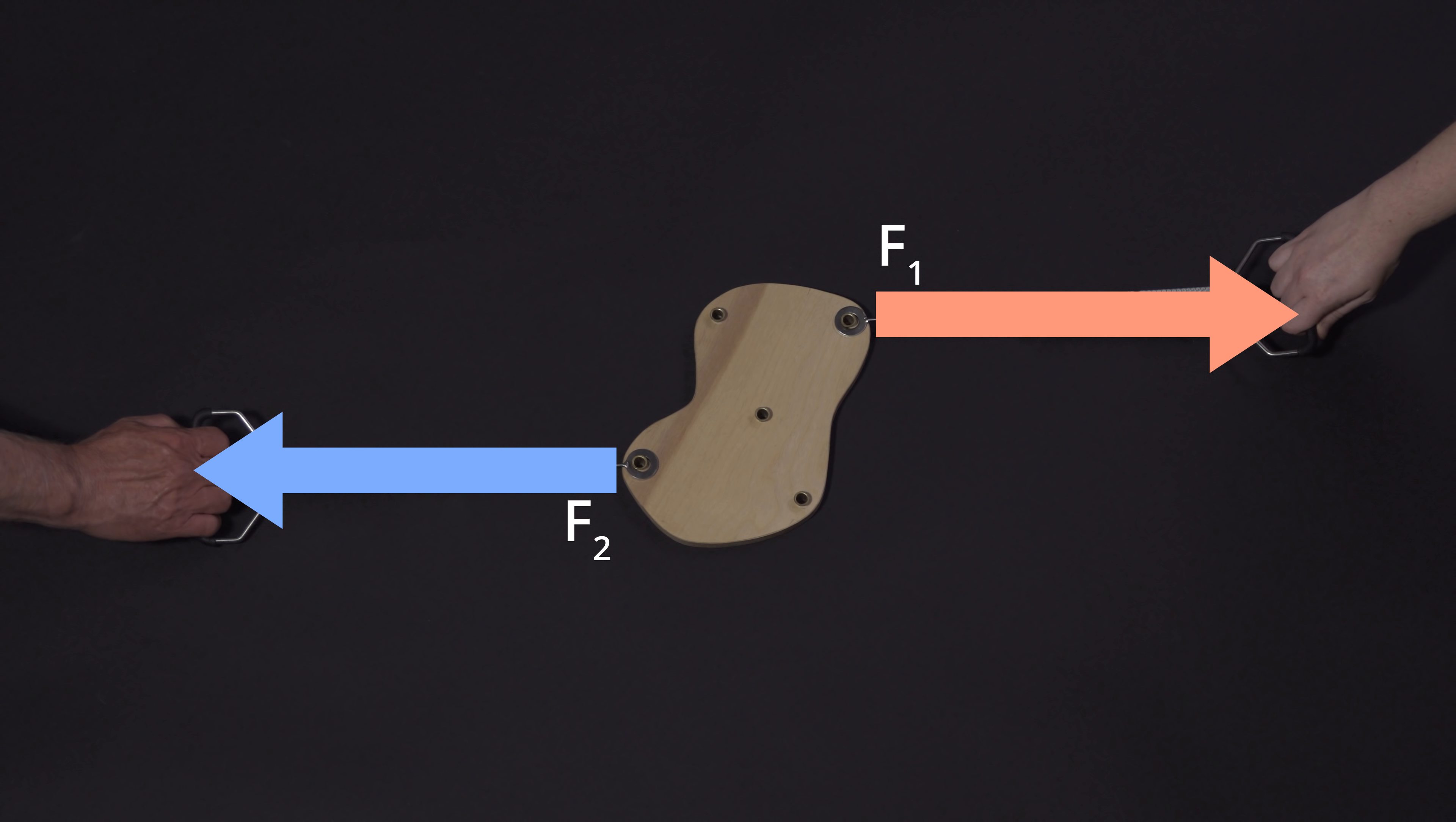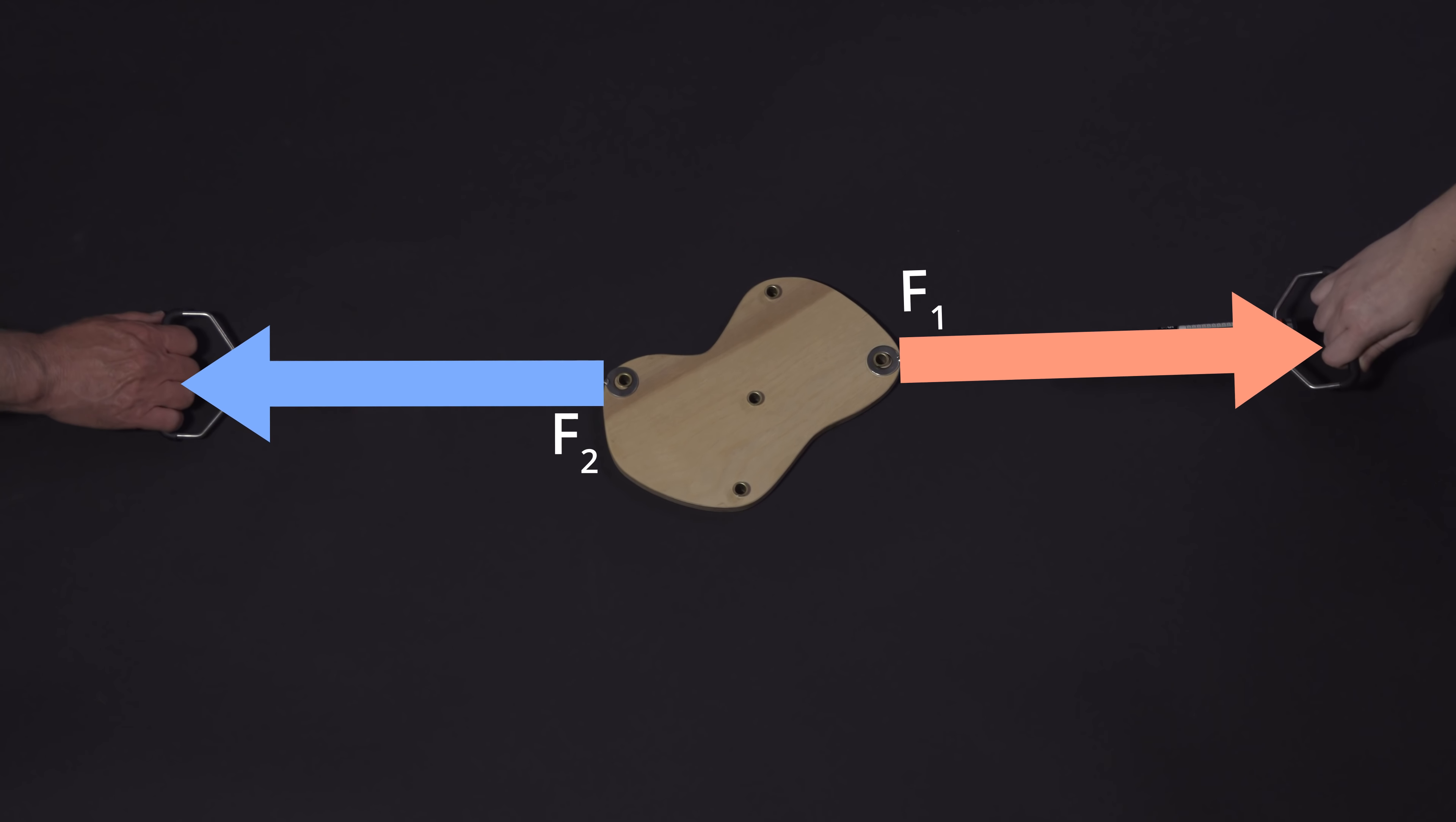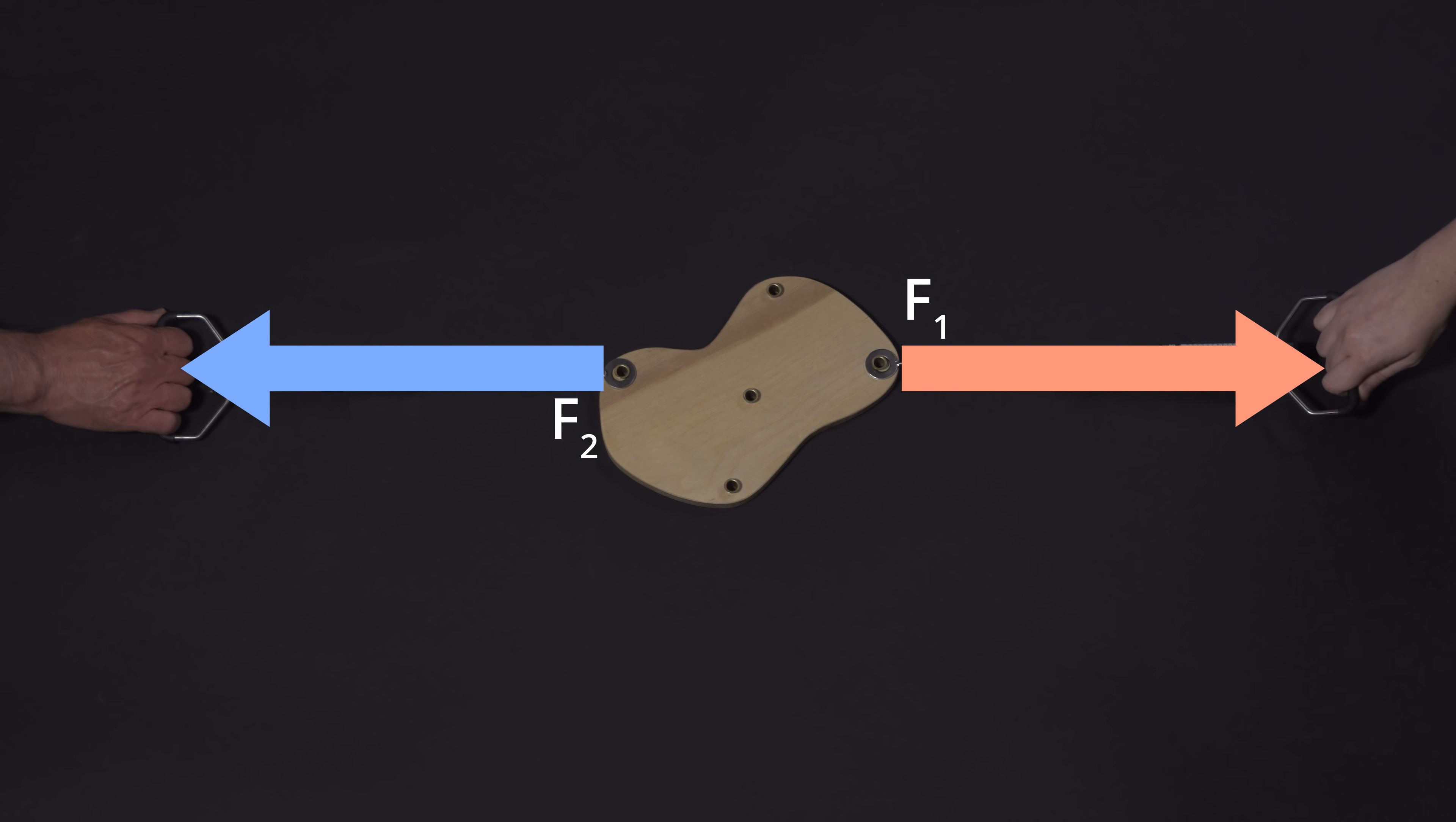Two equal and opposite forces would satisfy this first condition, but suppose we apply them like this. What do you think will happen? As you may have guessed, the body will rotate until the two forces line up with each other.